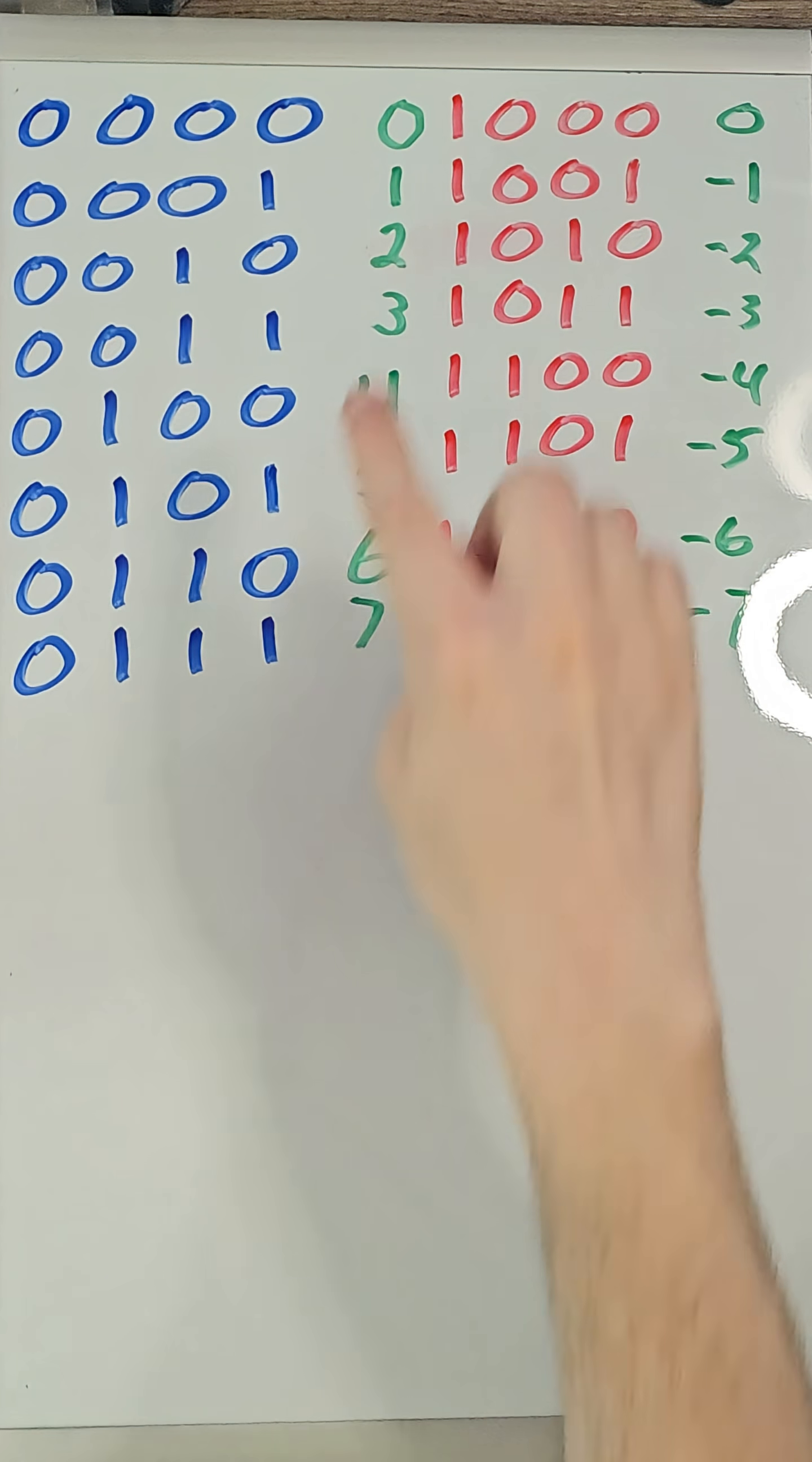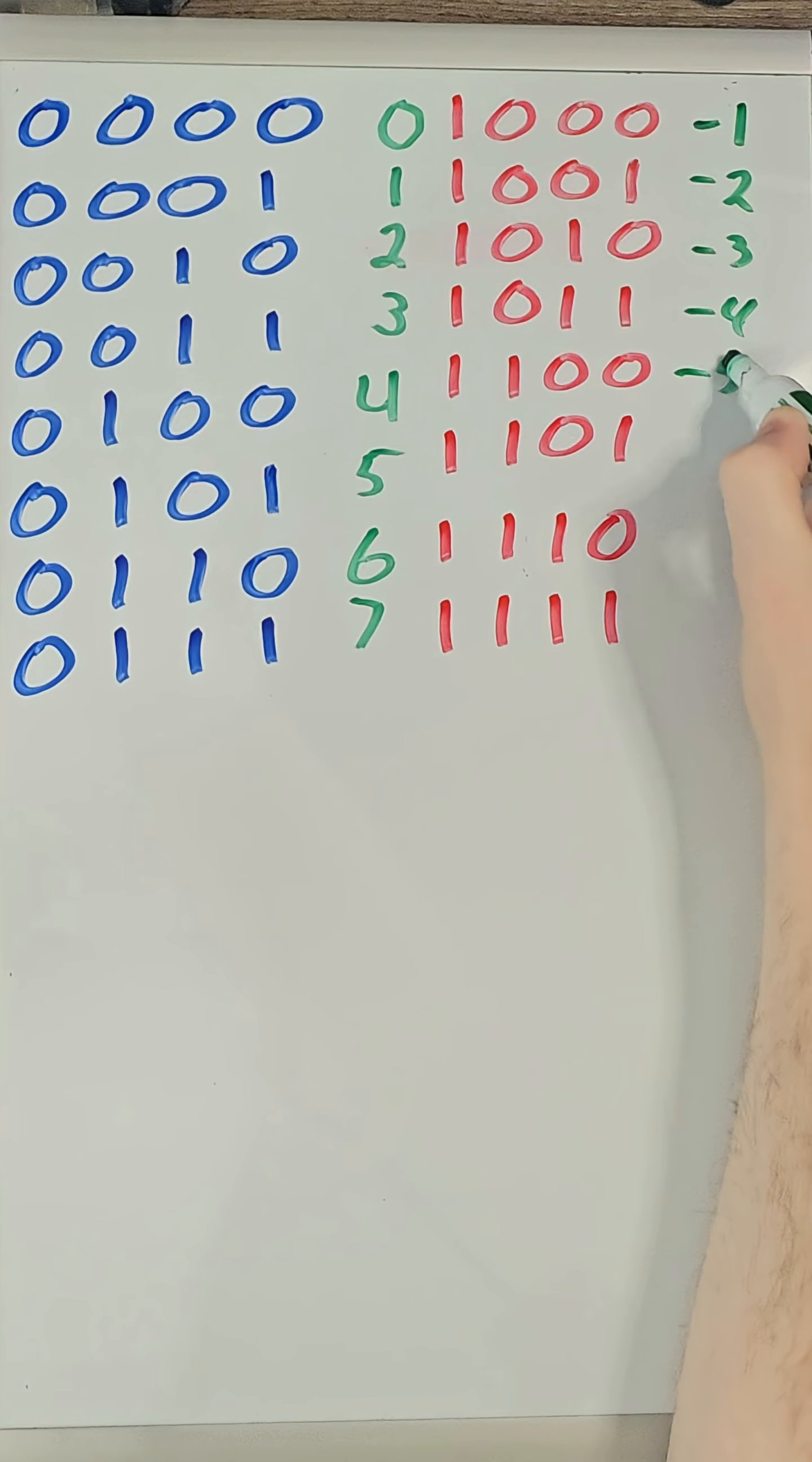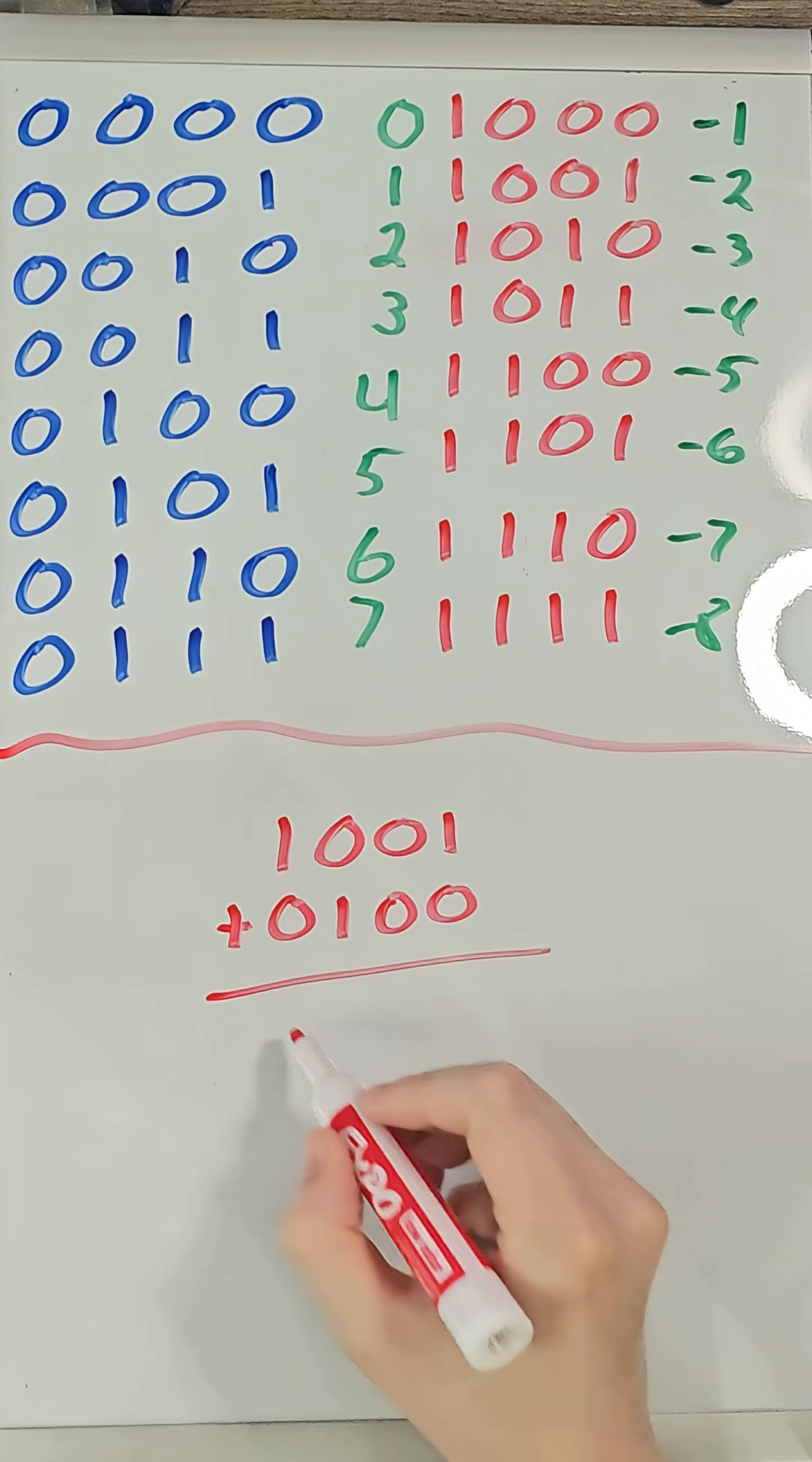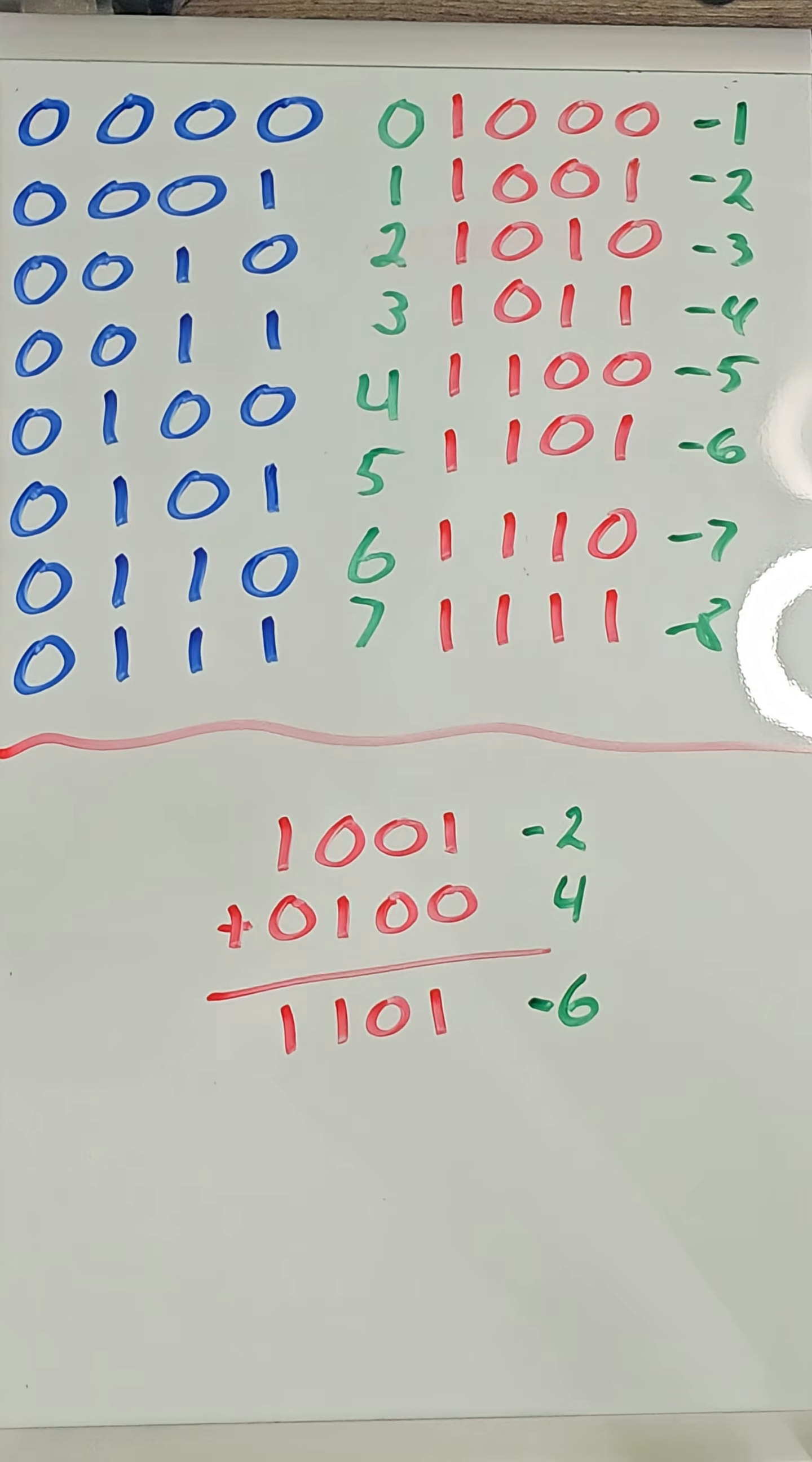Currently, 0000 and 1000 would both be 0, so that is a waste of a bit. Let's shift the numbers so 1000 is actually negative 1, and 1001 is negative 2, and so on. If we do math with this, we still get a larger negative number when adding a positive and a negative number together. We are closer, but not quite there.